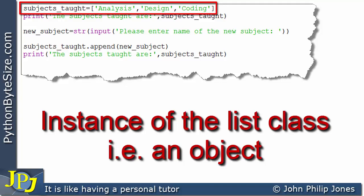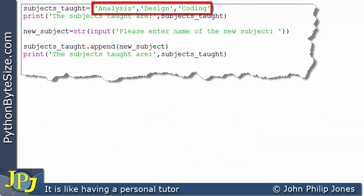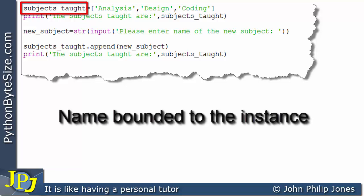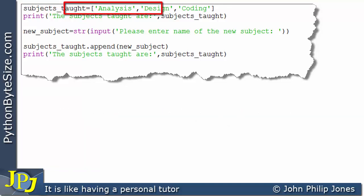And this instance is going to be holding the names of courses that appear within an educational program. We can see that what we will have here is a name that's going to be bound to that instance of the list class. In other words, bound to an object. And that object is going to have three elements. And these elements are going to have the values analysis, design, and coding, respectively.